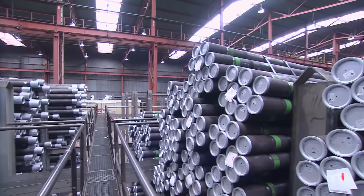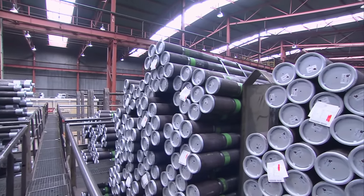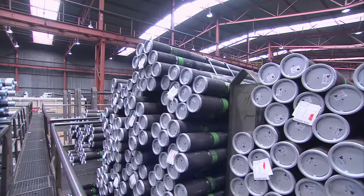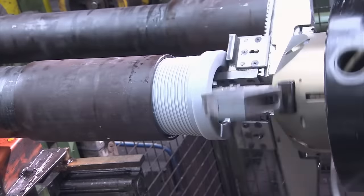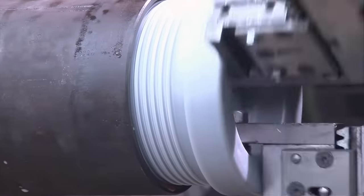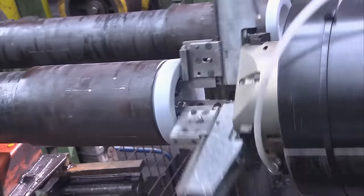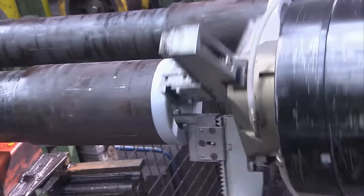The threaded pipe ends must be protected against mechanical damage and corrosive environments during transport and handling. After hydrostatic testing, a corrosion-resistant grease is applied to each exposed thread and a thread protector is screwed onto the exposed end.